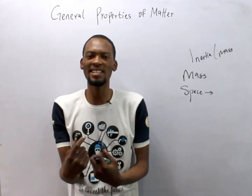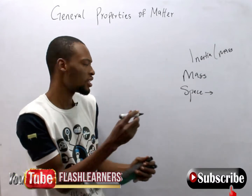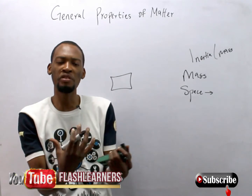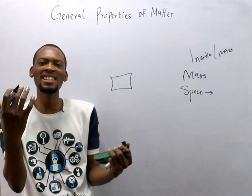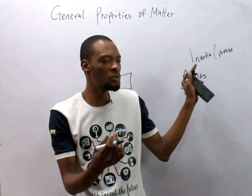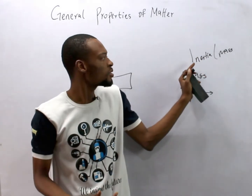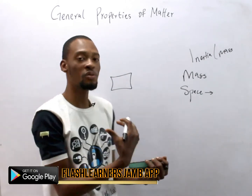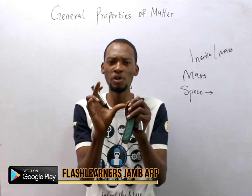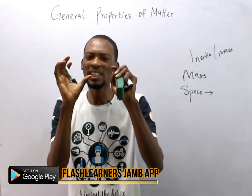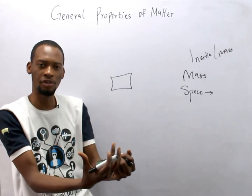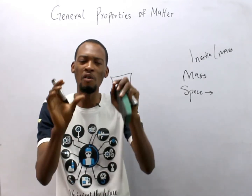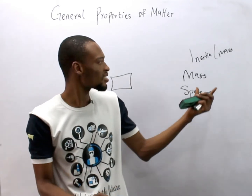Inertia is the reluctance of a body to move if it's already at rest, or the reluctance of a body to stop moving if it's already in motion. Inertia is due to the mass of a body, taking us to Newton's first law, which states that a body at rest will continue to be at rest, and if it is in motion will continue to be in motion unless acted upon by a force. The first law of motion is also regarded as the law of inertia.